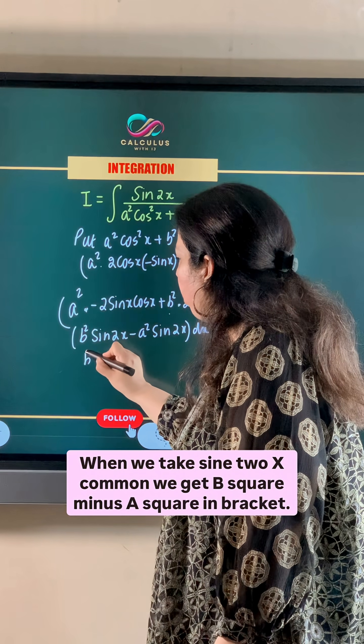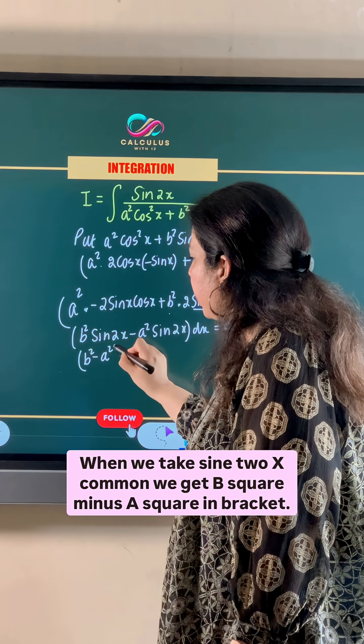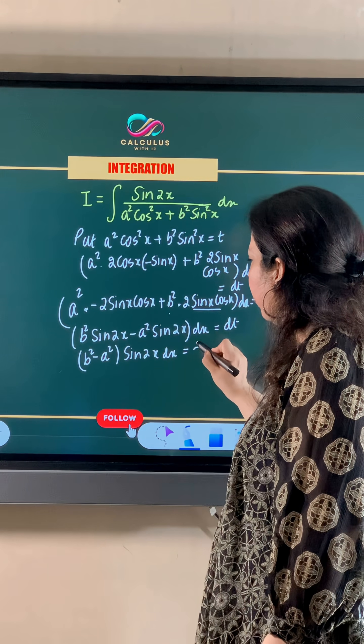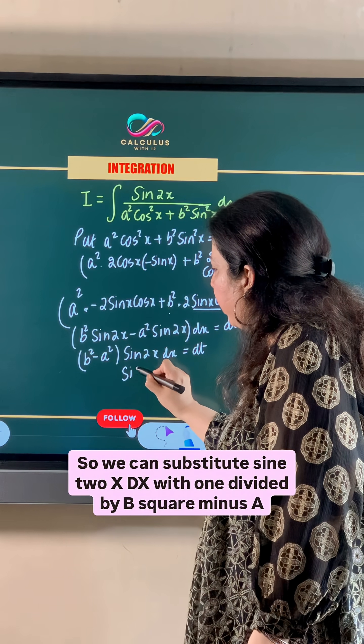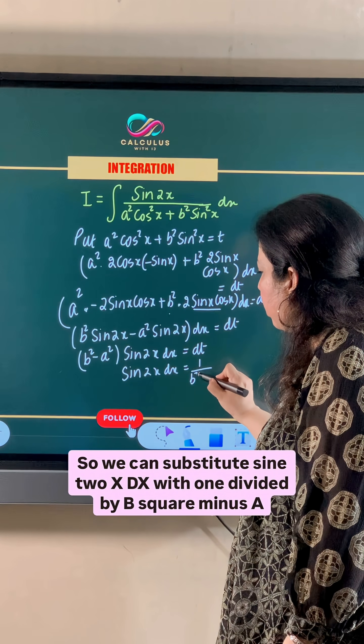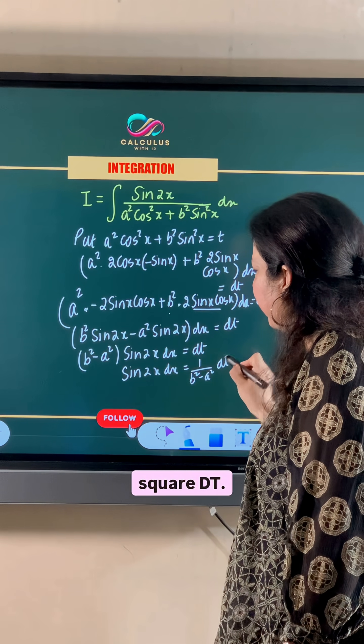When we take sin 2x common, we get b square minus a square in bracket sin 2x dx is dt. So we can substitute sin 2x dx with 1 divided by b square minus a square dt.